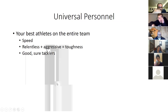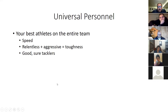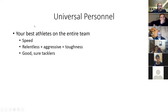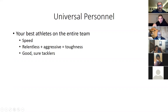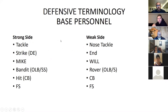Before I talk about the system, it's very important that we talk about personnel, because that tells you how you're going to be multiple. We have some universal personnel requirements. First off, we're going to have our best athletes on the entire team out on defense. Our best 11 will play, focusing on speed, being relentless and aggressive — which equals toughness — and good, sure tackles. If you have these three elements, you're off to a great start with team defense.